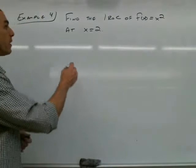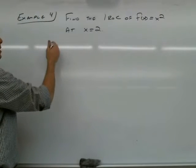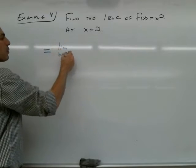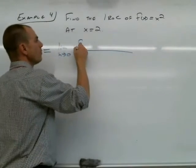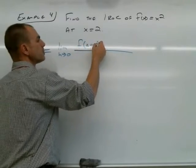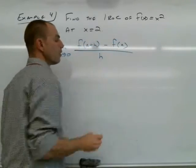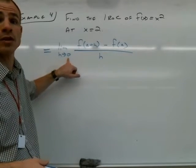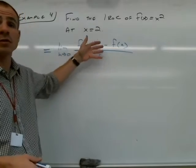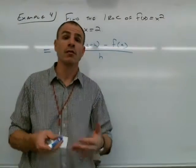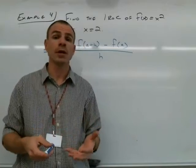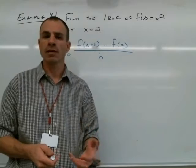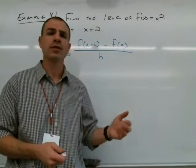Because we know that the instantaneous rate of change is going to be equal to the limit as h approaches 0 of f of a plus h minus f of a all over h. We have a limit here, and because h is heading towards 0, this limit is producing 0 over 0. We know from earlier in the year that if we get that 0 over 0 limit, we can work around with it—we can do some algebra and come up with some kind of answer in most cases.